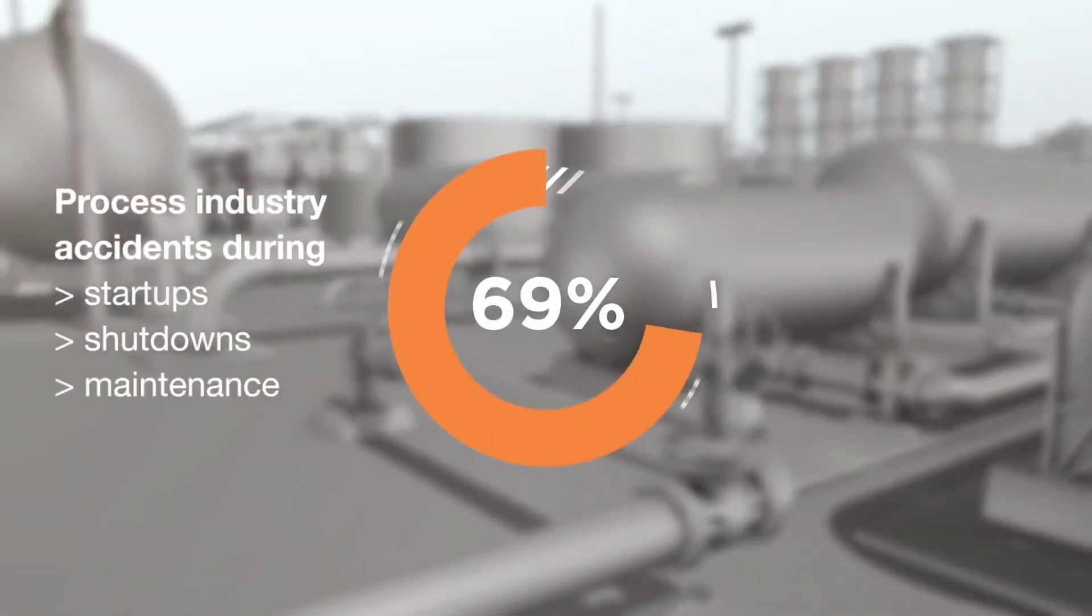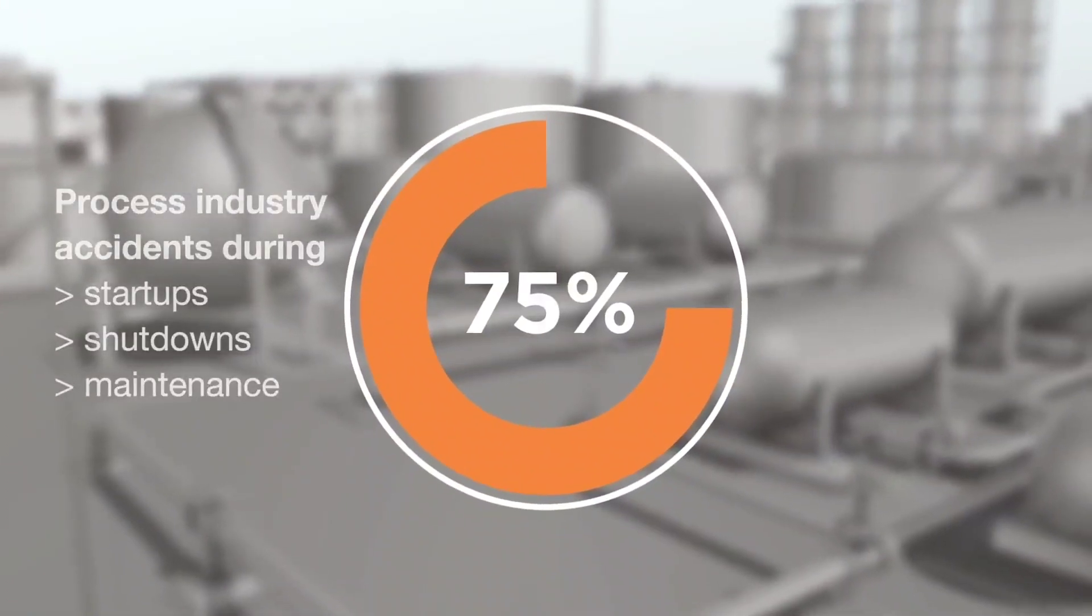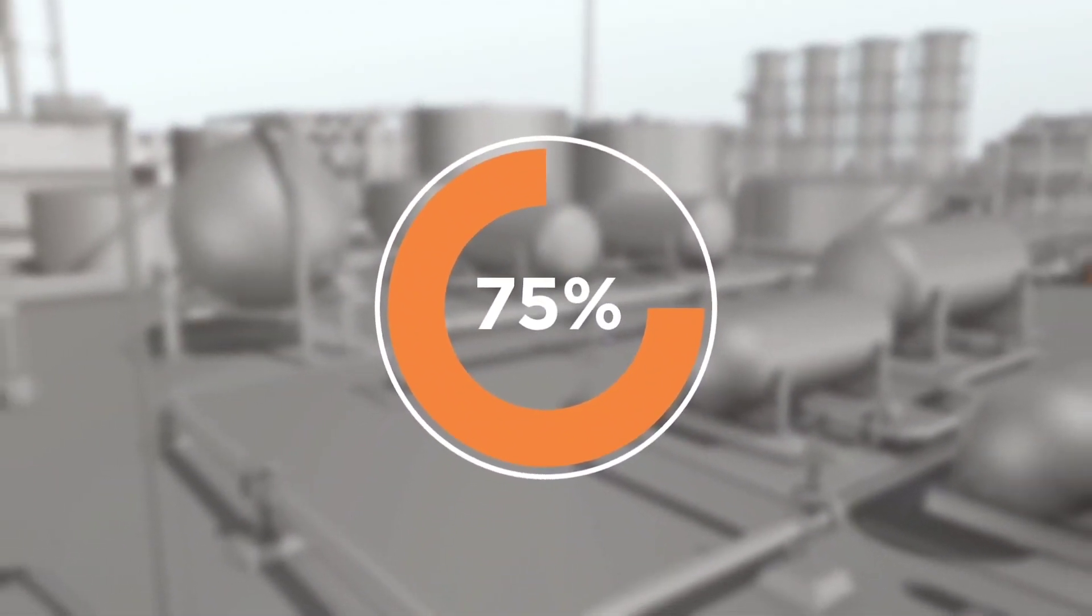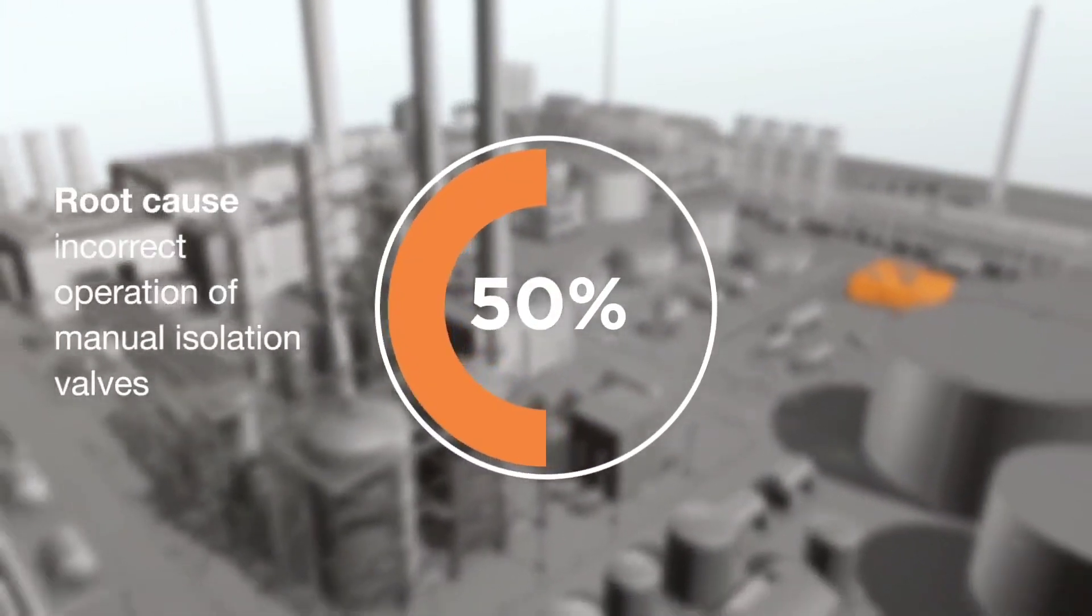75% of the accidents in the process industry happen during start-ups, shutdowns and maintenance. In 50% of these accidents, root cause is incorrect operation of manual isolation valves.